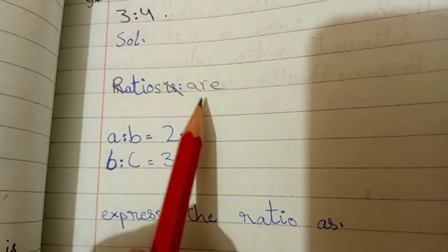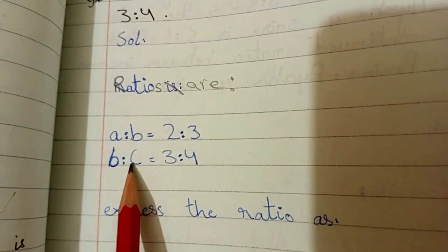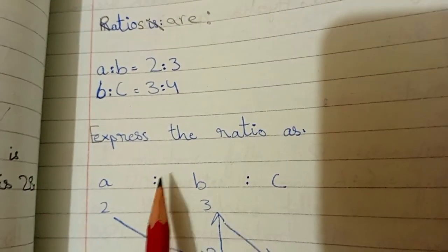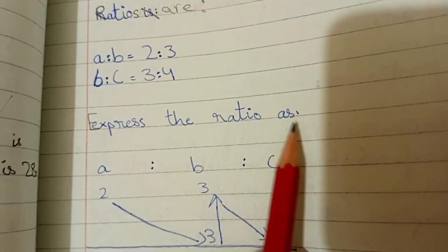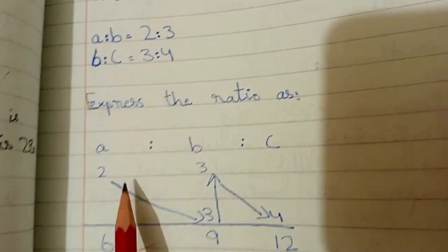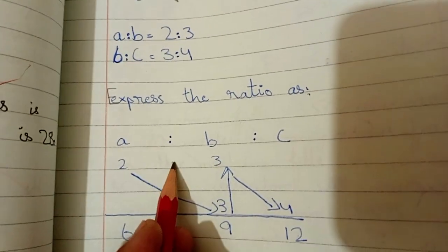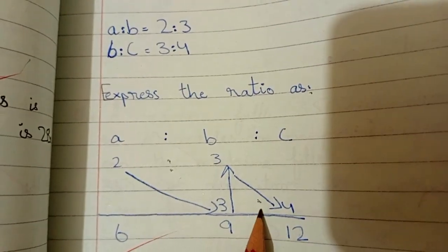Ratios are A:B and B:C. دونوں کے ریشوز بتا دیئیں اب یہاں پہ آئیں گے تو یہاں mention کریں گے express the ratio as یعنی اب کس طرح سے convert کریں گے. سب سے پہلے A, B, C رکھیں گے. A:B کا ریشو یہاں آ جائے گا اور B:C کا ریشو یہاں آ جائے گا.